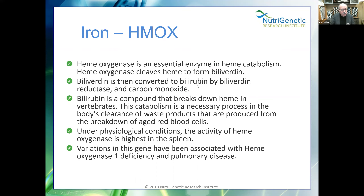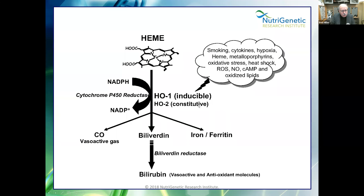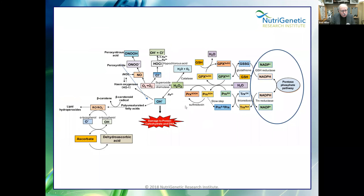Biliverdin converts to bilirubin and carbon monoxide. Interestingly, carbon monoxide in small amounts can stimulate Nrf2, though of course too much kills you. Bilirubin is a compound that breaks down heme in vertebrates, and its activity is highest in the spleen with associations with pulmonary disease. This brings us back to NADPH being critical — if you don't recycle your oxidized glutathione, don't recycle your thioredoxin, and don't support putting heme into storage, you're setting yourself up for the Fenton reaction and hydroxyl radicals.